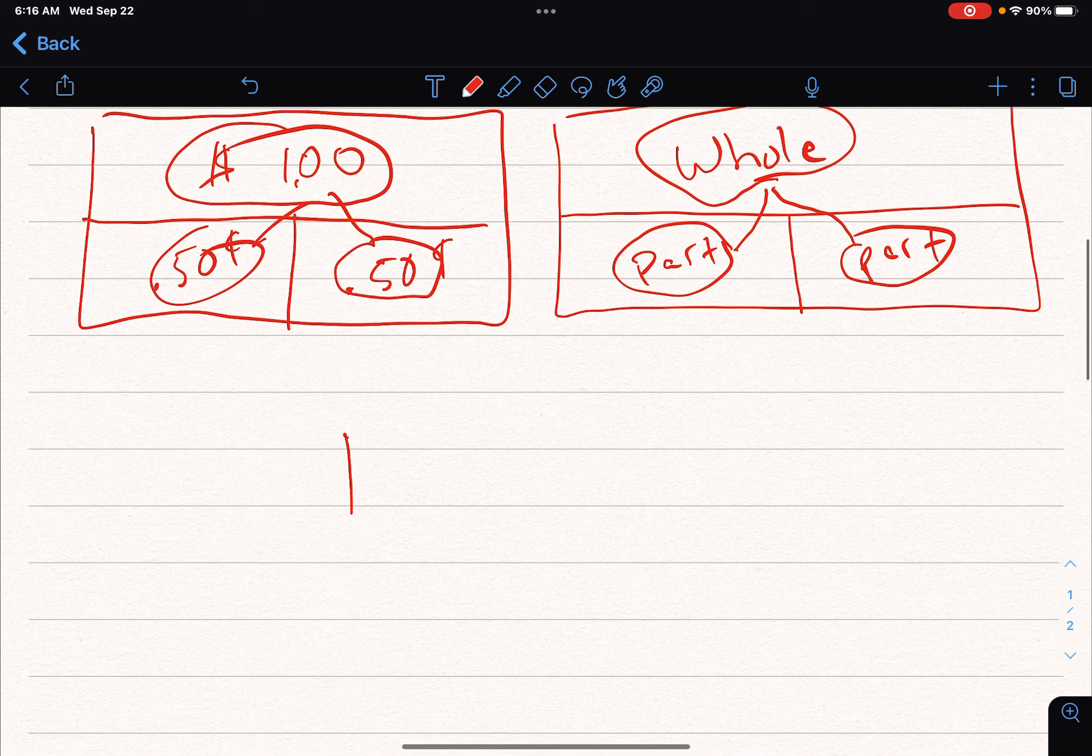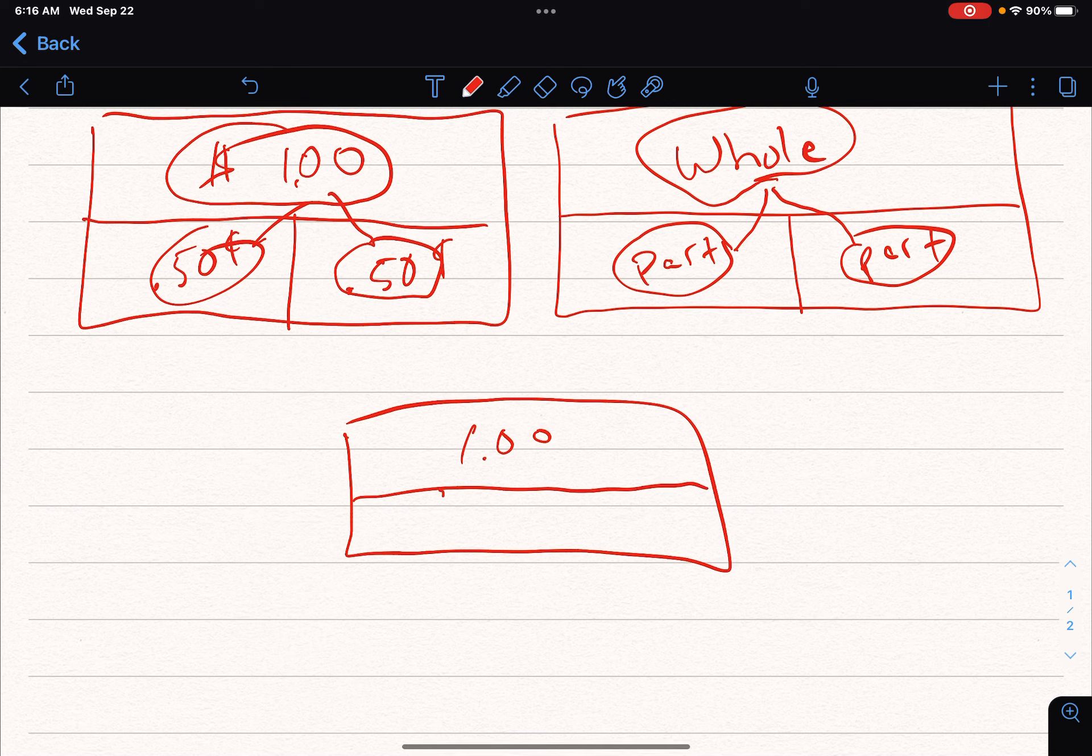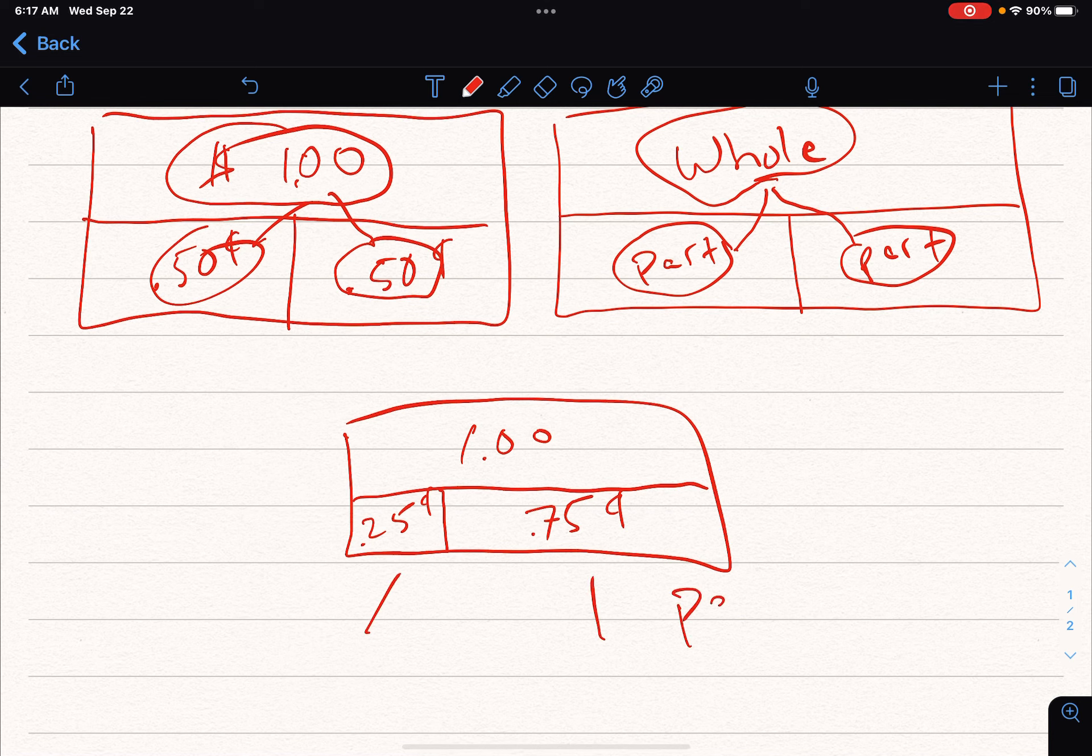And same thing could be said for, if this is $1, right? And then they do this. And this is 25 cents. And this is 75 cents, right? Both of these are a part of the dollar. And the dollar is the whole.